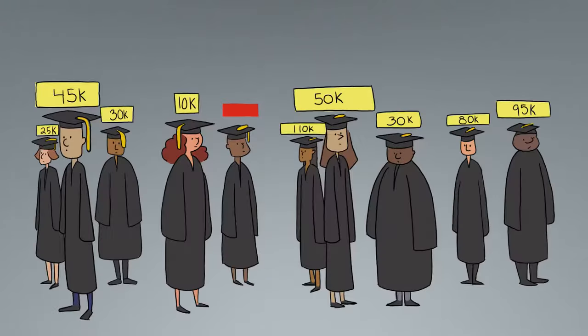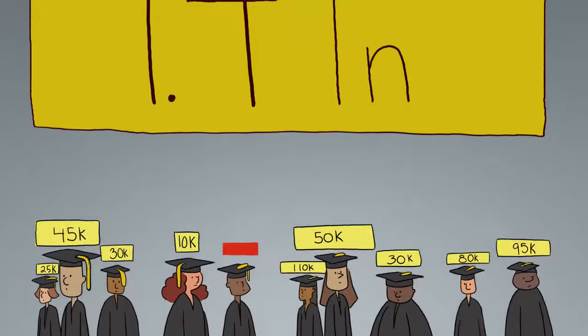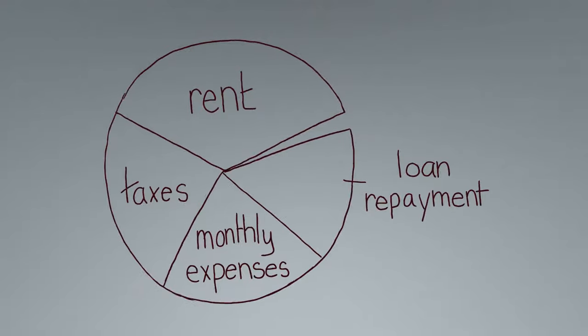So what does that mean for the rest of us? More than 44 million Americans owe 1.4 trillion dollars in outstanding student loans, meaning they have less disposable income.